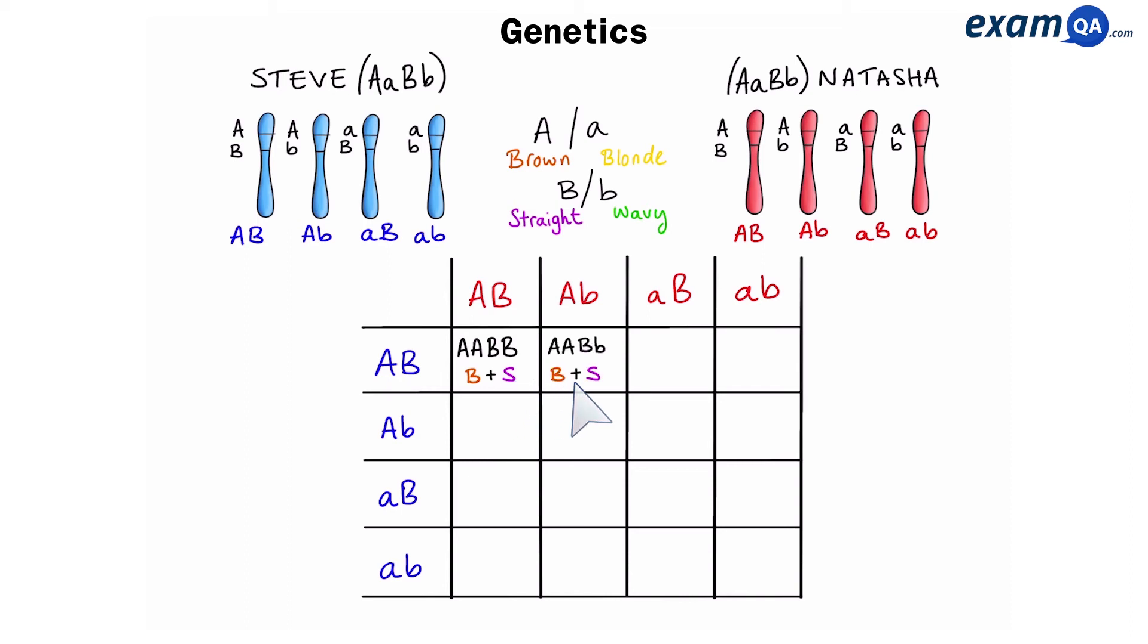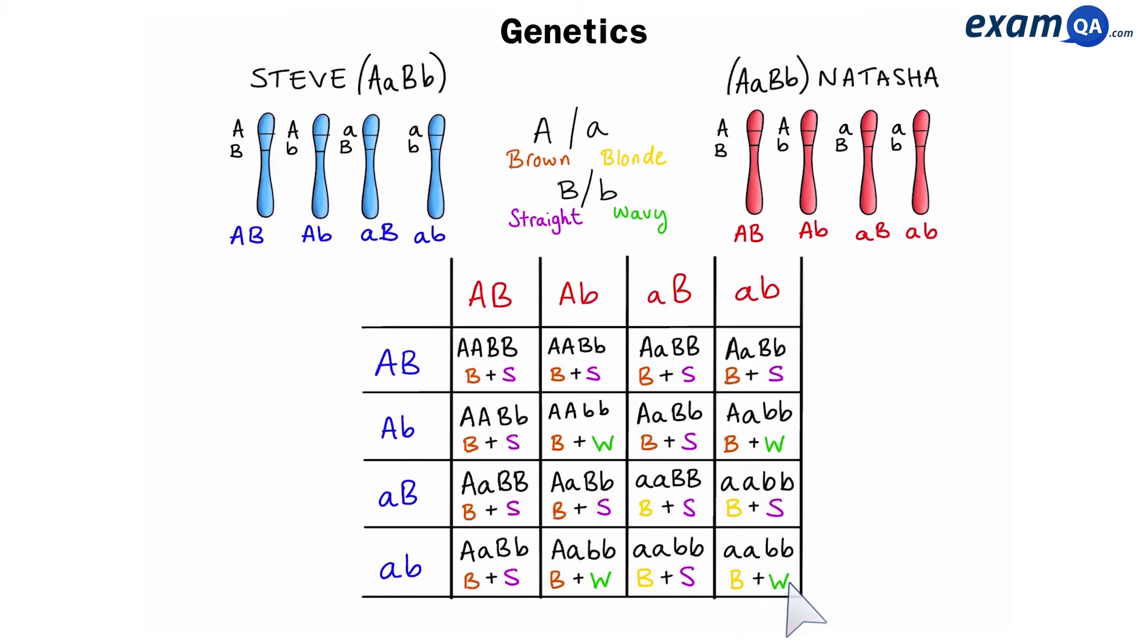This one will have brown and straight hair as well. Let's try another one. So, here, again, the A's go first, even though they are lowercase, followed by the B's. This offspring will have blonde and straight hair. Here's another one. Brown and wavy hair this time. And finally, blonde and wavy hair. And these are all the other offspring.